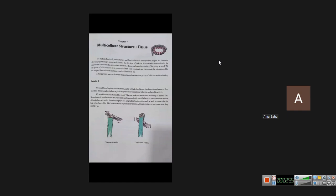When we try to observe different parts of animal and plant under the microscope — like leaf fill, internal layer of chicken, muscle of fish — let us perform some activities to find out some functions that a group of cells are capable of doing. Let us understand the group of cells and the functions of their functions.